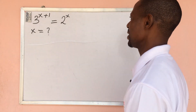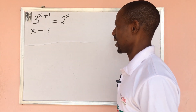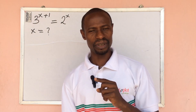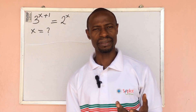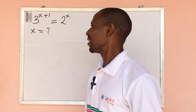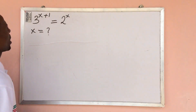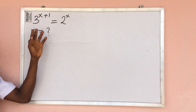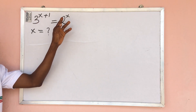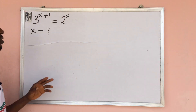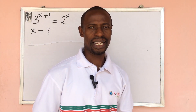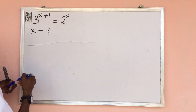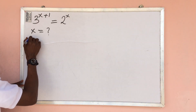We have a challenge on the board today. Before we go to this challenge, if you are new to this channel please subscribe and turn on the bell notification button. The question is: three to the power of x plus one equals two to the power of x. What will be the value of x? This is an exponential equation.